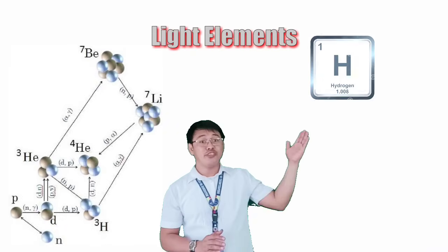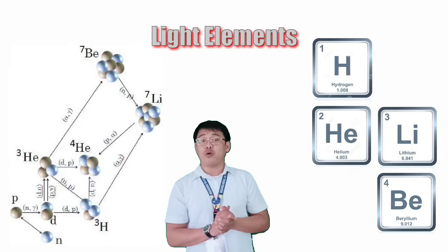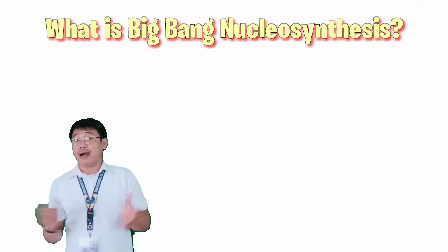Light elements hydrogen, helium, lithium, and beryllium were formed through the process called Big Bang Nucleosynthesis. Now what is Big Bang Nucleosynthesis?